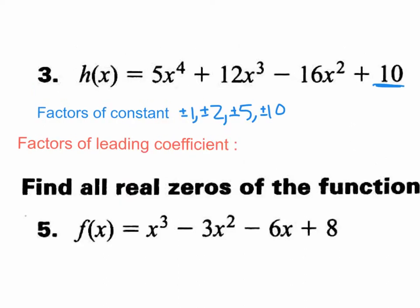And how about the factors of the leading coefficient? Well, the leading coefficient is the number that's out in front, the a value. And in this case, it's 5. So what times what is 5? It's a simple 1 and a 5. And again, we need plus or minuses.